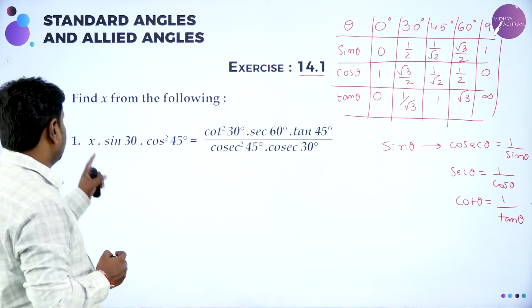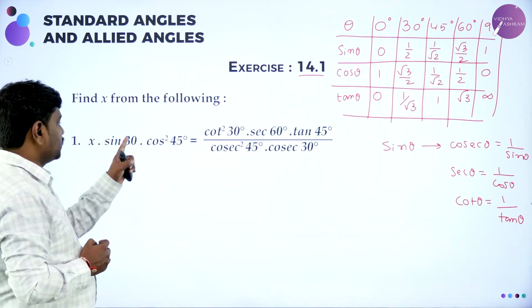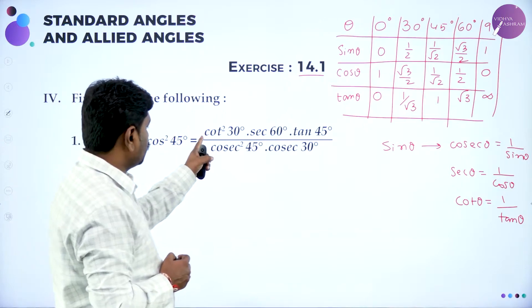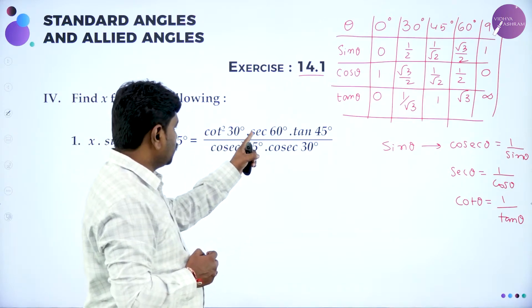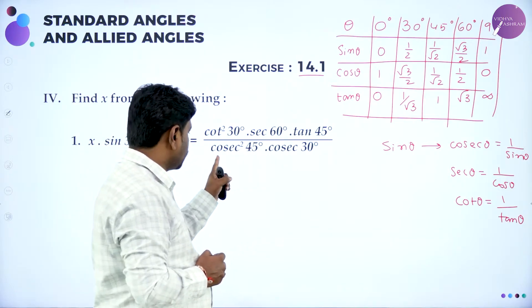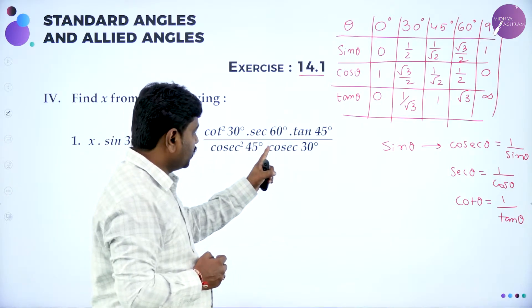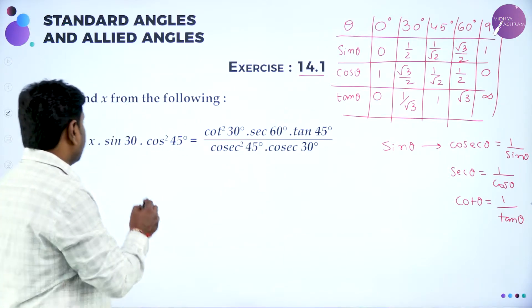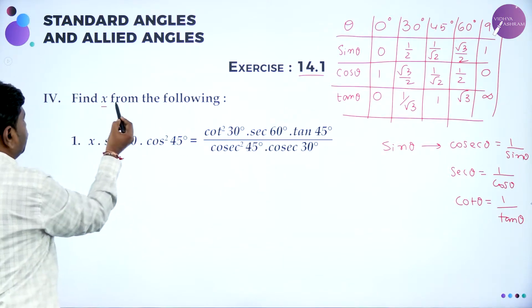They have given: x · sin 30 · cos² 45 = cot² 30 · sec 60 · tan 45 divided by cosec² 45 · cosec 30. They want us to find the value of x.